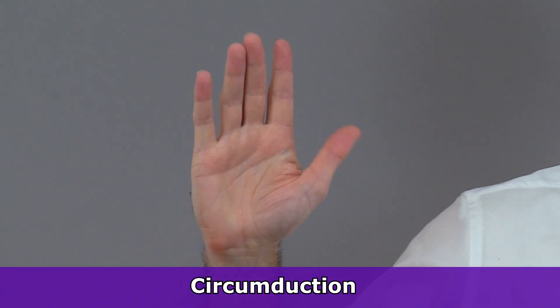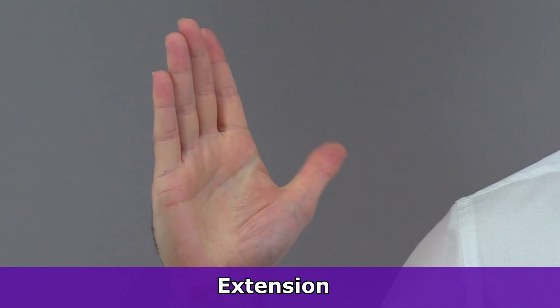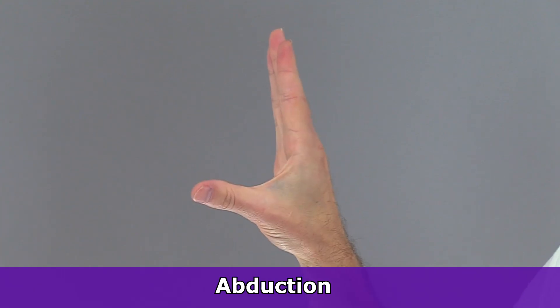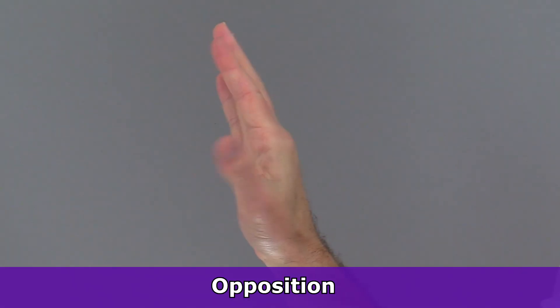Now thanks to this saddle joint, the thumb can perform various movements such as circumduction, flexion and extension, abduction and adduction, as well as special movements called opposition and reposition.